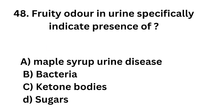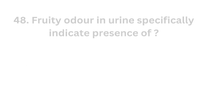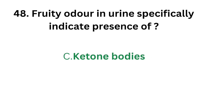Question number 48. Fruity odor in urine specifically indicates presence of: Option A - Maple syrup urine disease; Option B - Bacteria; Option C - Ketone bodies; Option D - Sugars. The correct answer is Option C, Ketone bodies. Fruity odor in urine specifically indicates presence of ketone bodies.